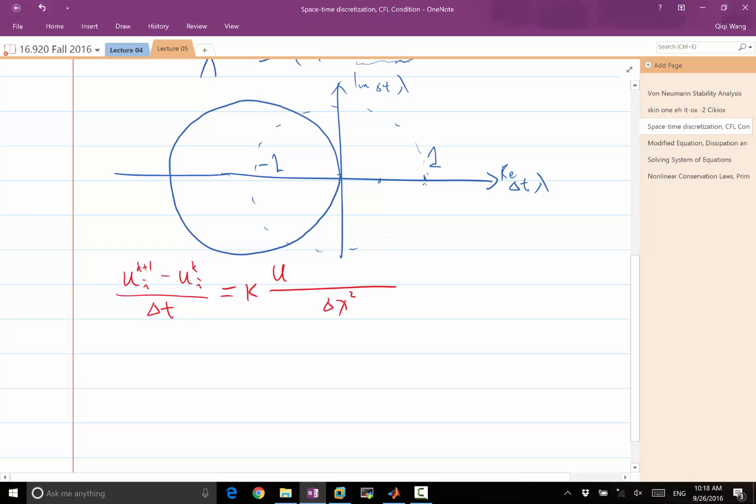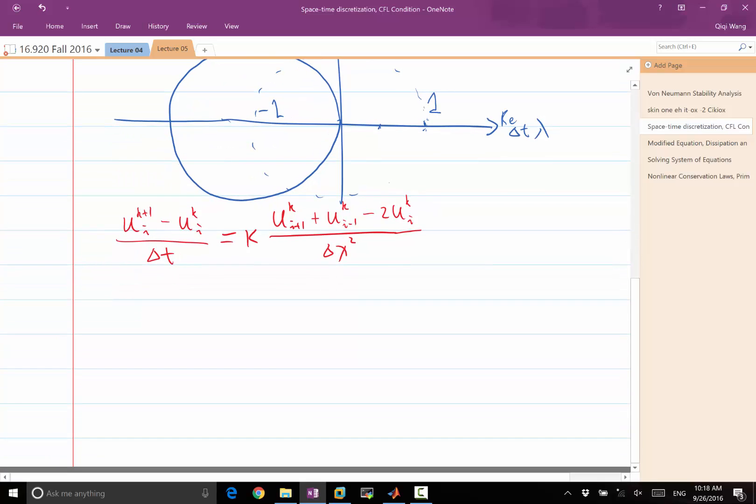Because it's forward Euler, this is u_k, my right hand side is expressed as the differential operator operated on the known quantities or the quantity at the previous time step. If it's backward Euler, the whole right hand side would be k plus one.